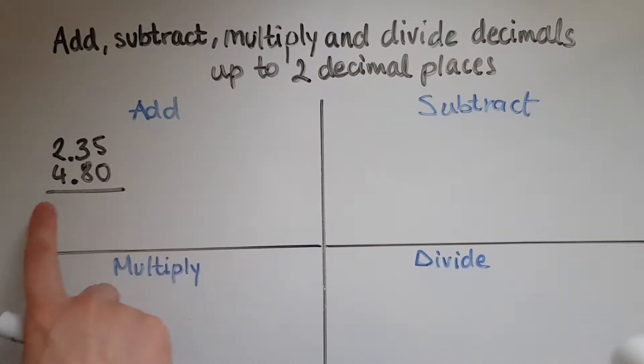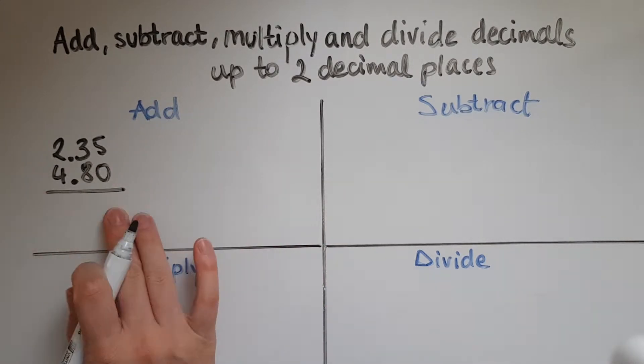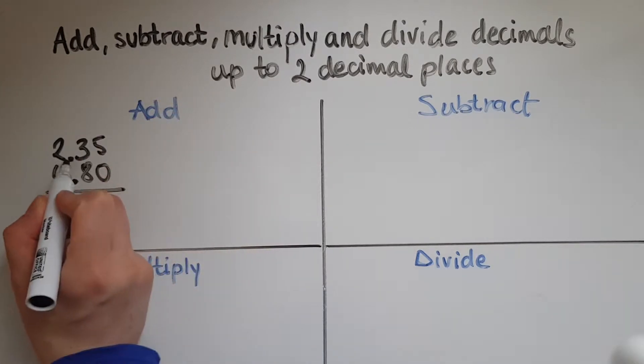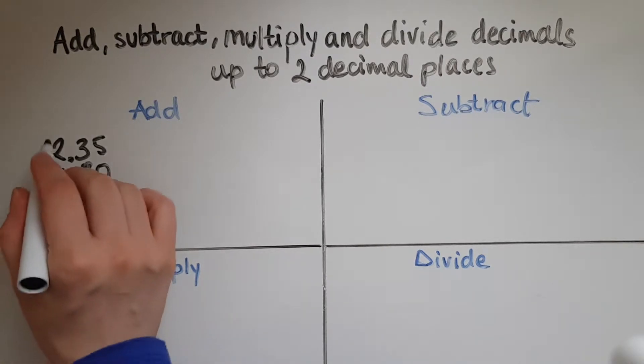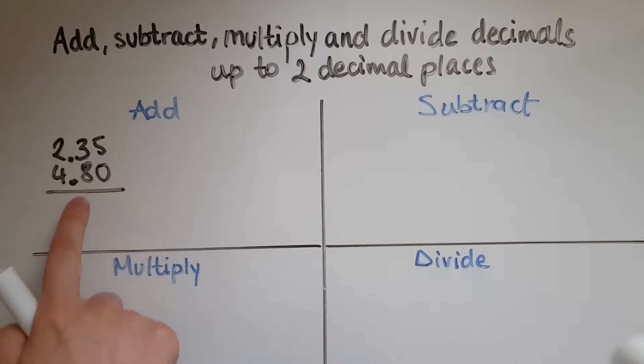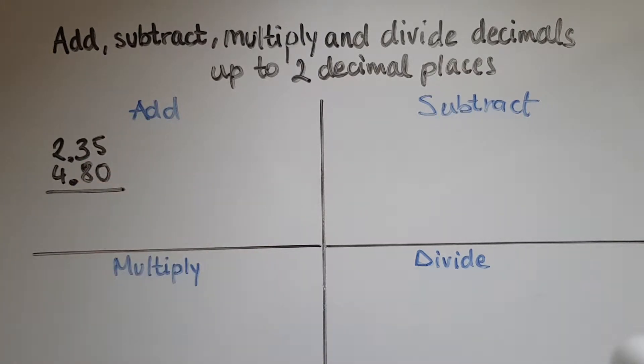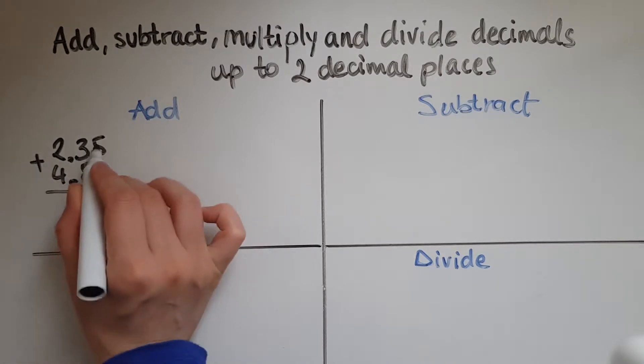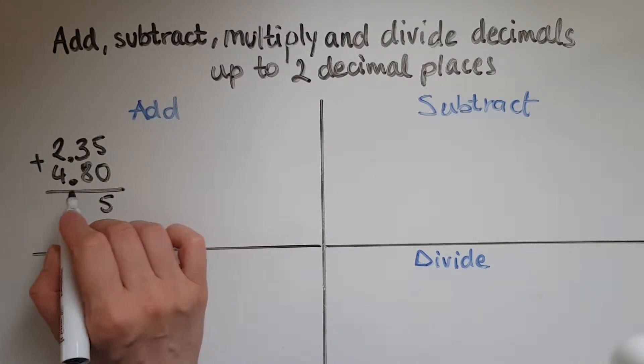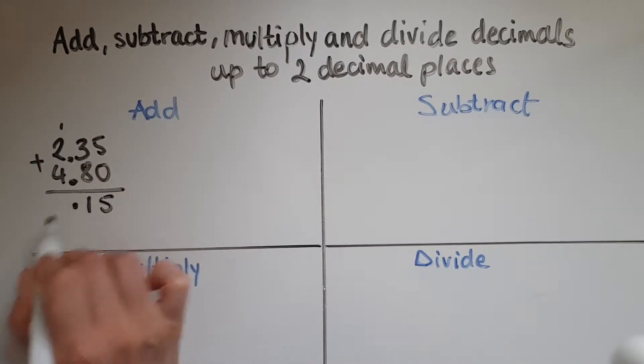If I have £2.35 and £4.80, I would add these starting from the right and making sure I've got them lined up so that decimal points are lined up, so that pounds are under the pounds, the tenths are under each other and the hundredths are under each other. So we get 5 and 0 makes 5, 3 and 8 is 11 so 1 down and 1 carried over. Put the decimal point in line with the other two, and we got 2 and 4 makes 7. So this would be £7.15.